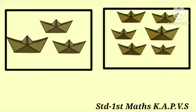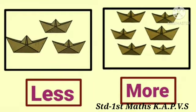Look at another example. There are less boards in the first picture than the second picture. The number of boards are less in the first picture. The second picture has more boards than the first one. So, first picture has less boards and the second picture has more boards.